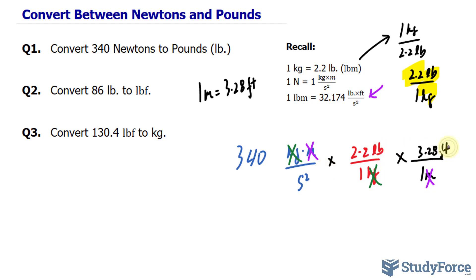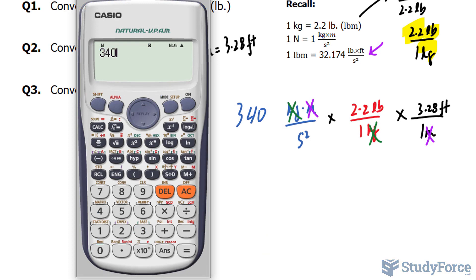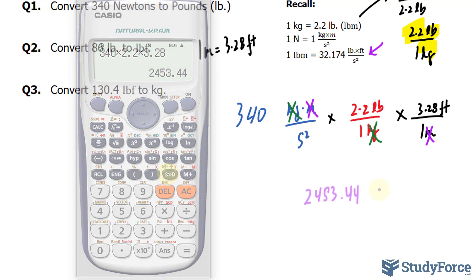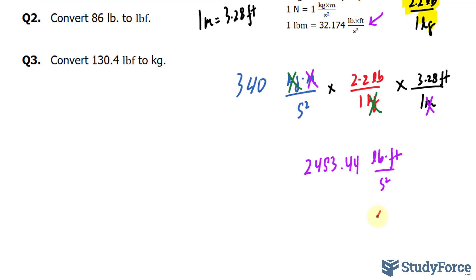So, let's multiply 340 times 2.2 times 3.28, and we get roughly 2,453.44 pound foot per second squared. Pounds times foot per second squared.